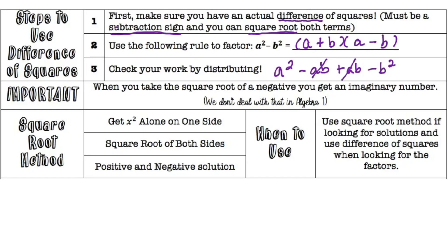That's why you're able to use that quick method — you have a minus sign and you can take the square root of both terms. Also important to know: if you have a negative number underneath the radical, that would be an imaginary number. You won't have to deal with imaginary numbers in Algebra 1 — you'll learn about that in Algebra 2. So if it is a negative underneath the radical, you'd say there's no answer.